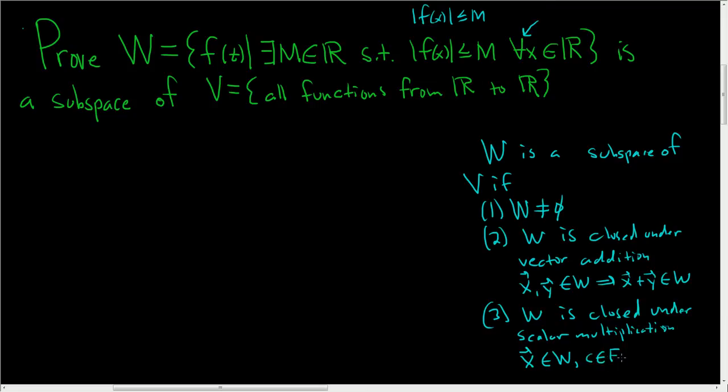And what this means is that given any vector x in W and any scalar C in a field, here our field will be the real numbers, that we have a new vector, which is the scalar C times the vector. This is the scalar product. And that's also in W. So in order to do this problem, we carefully have to go through and just check all of these conditions. So proof.